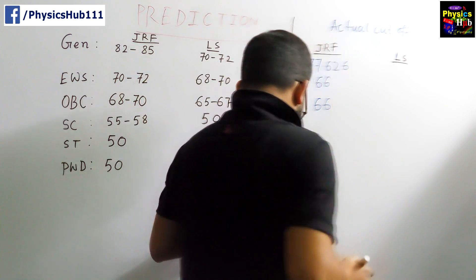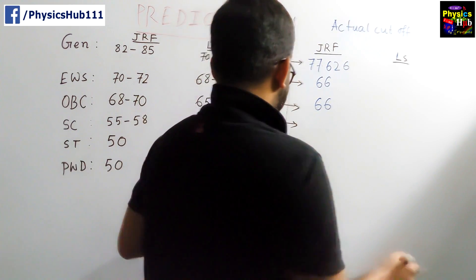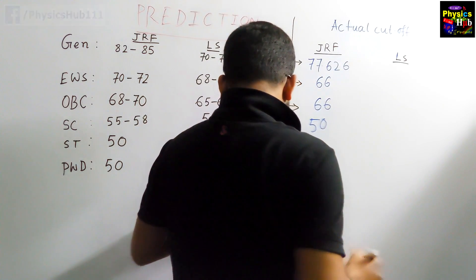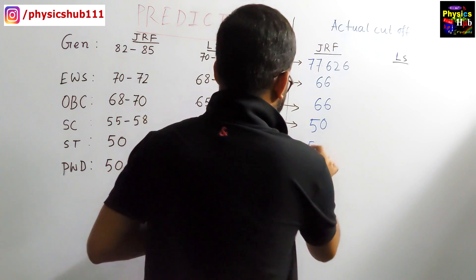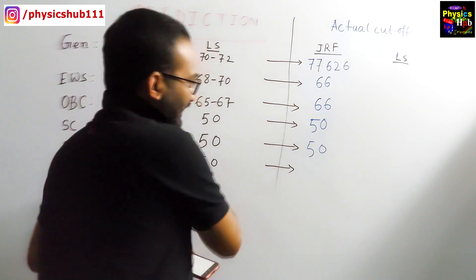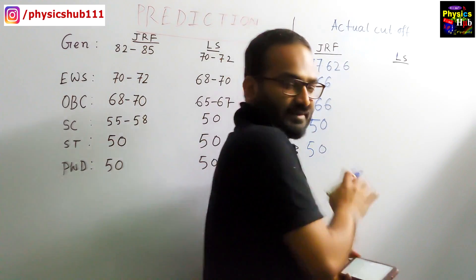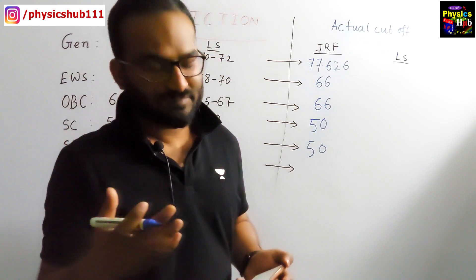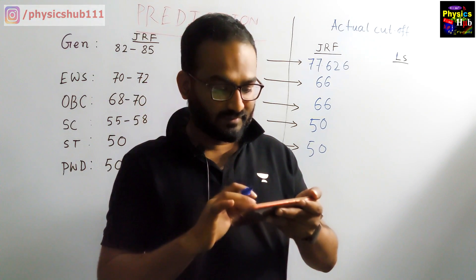Next, SC is 50. ST is also 50. Exactly. And I will tell you why it is 50 because there is some minimum benchmark. It is also mentioned in this cutoff list.